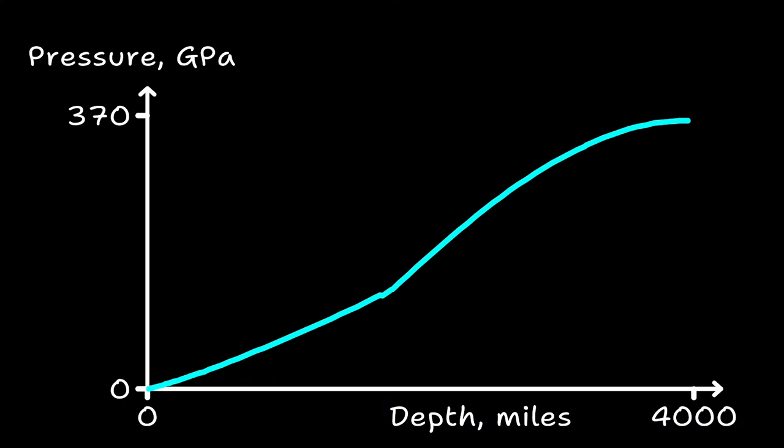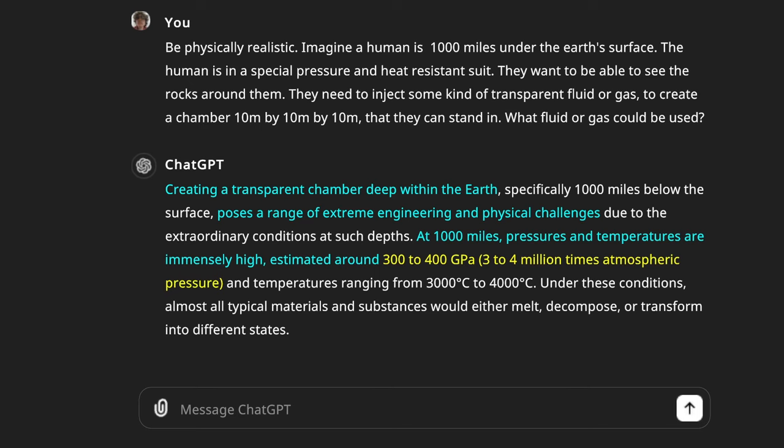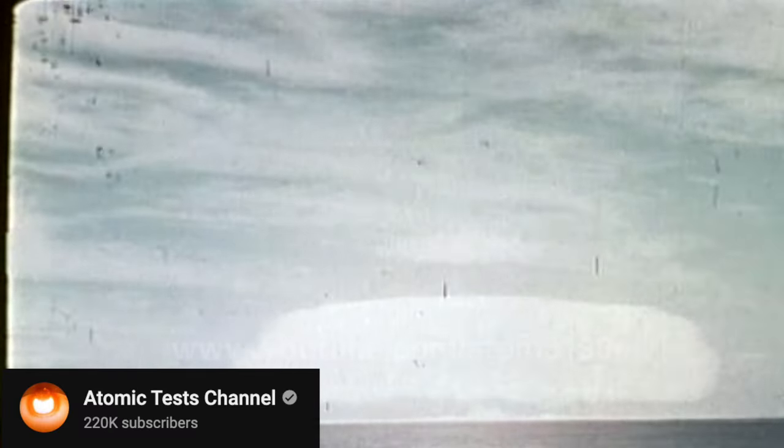Now, going back to our graph of pressure against depth, if I draw a line at 1,000 miles, we can see the pressure is around 70 gigapascals. A lot less than the 350 gigapascals that ChatGPT claimed, but 7 times more than a 1 megaton nuclear explosion. So, that's going to be challenging. So, that's pressure.